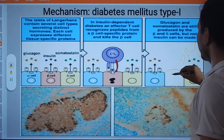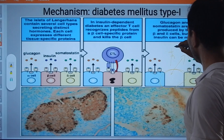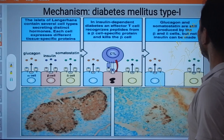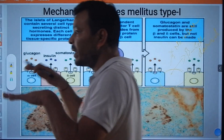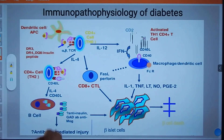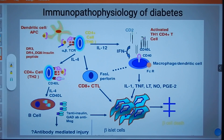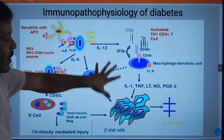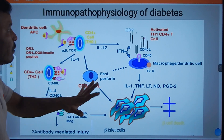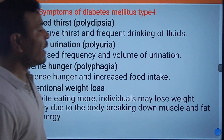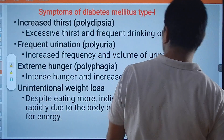Once the beta cell is damaged, there is no insulin production. With no insulin, the concentration of glucose increases — an increase in blood sugar — which leads to Type 1 Diabetes Mellitus. This is a complex mechanism. If you are interested, you may look further into which specific molecules are involved.